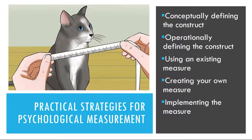You'll want to implement any measure in a way that maximizes its reliability and validity. In most cases, it's best to test everyone under similar conditions that, ideally, are quiet and free of distractions. Participants are often tested in groups because it's efficient, but be aware that it can create distractions that reduce the reliability and validity of the measure. As always, it's good to use previous research as a guide — if others have successfully tested people in groups using a particular measure, then you should consider doing it too.